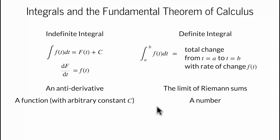Moreover, when we evaluate the integrals, we get two quite different objects. The indefinite integral gives us a function — actually a whole family of functions, because we have the arbitrary constant c which can take on any value. The definite integral, on the other hand, simply gives us a number: the total change from a to b.